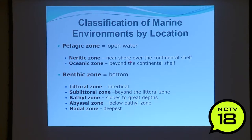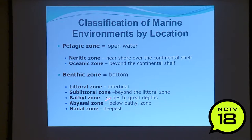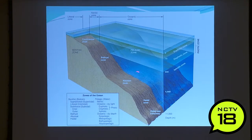Marine environments are classified based on whether they are open water, or pelagic. The neritic zone is near shore over the continental shelf; the oceanic zone is beyond the continental shelf. The benthic part is the bottom, with many terms: littoral or intertidal, sublittoral, bathyal, abyssal zone below the bathyal, and hadal zone all the way down in the trenches. Here's a diagram showing all these zones with the photic layers — it has a ton of good information.